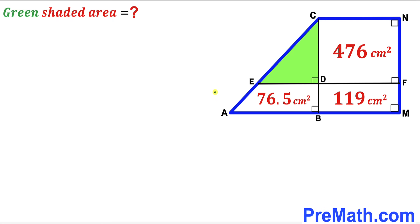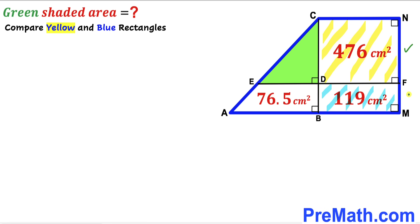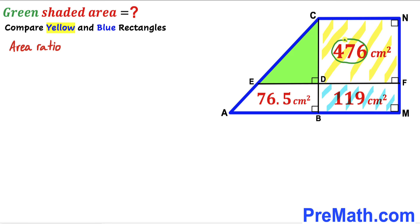Let's get started. We are going to consider these two rectangles — I'm going to label the bigger rectangle as the yellow rectangle and the smaller one as the blue rectangle. Comparing them, we can see the length of both rectangles is the same. The area ratio is 476 to 119, which reduces to 4 to 1.